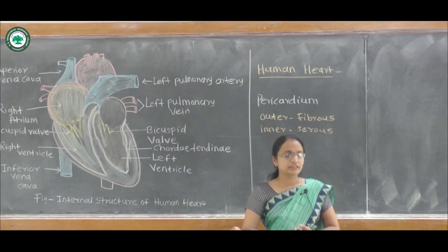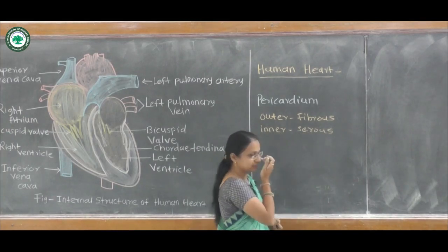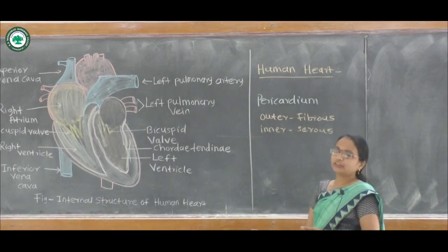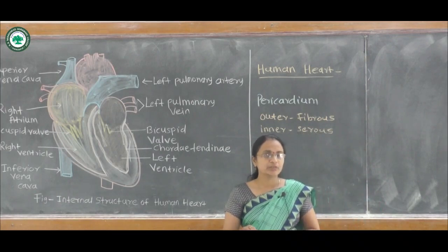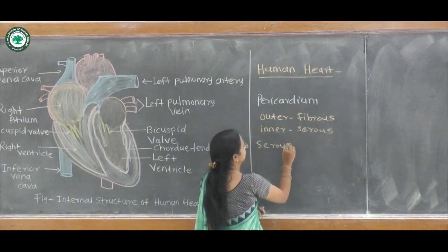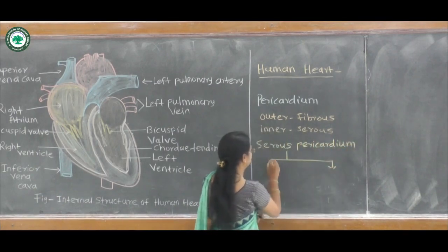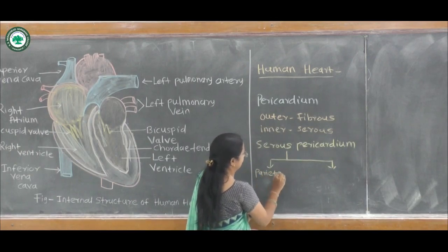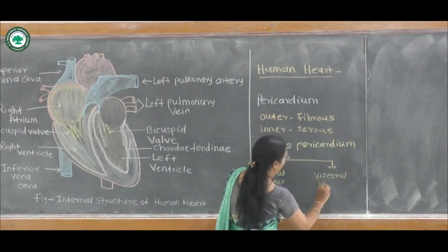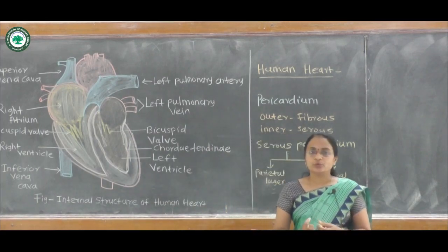The serous pericardium is subdivided into the parietal layer and the visceral layer. Both the fibrous pericardium and serous pericardium are protective in function. These two layers of the serous pericardium are each made up of a single layer of squamous epithelial tissue and are also protective in function.